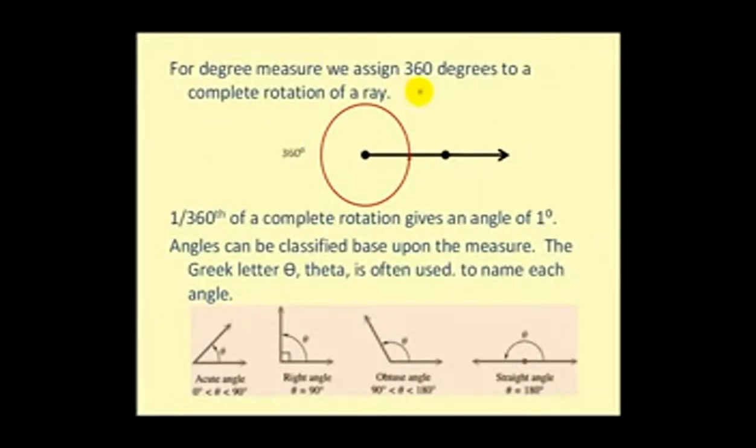For degree measure, we assign 360 degrees to a complete rotation of the ray. You can think of this as the second ray going all the way around the circle. Therefore, 1/360th of a complete rotation gives an angle of one degree.